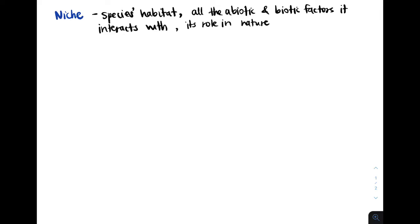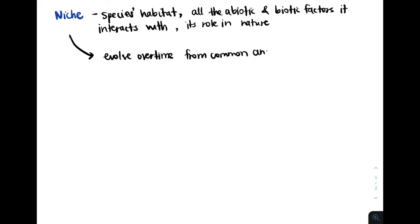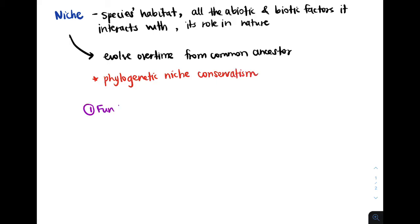A niche is something that a species retains from its ancestors, and the niche evolves over time. We know this because we see that similar species have similar niches, and this is because they diverged from a common ancestor that had a certain niche. This idea that a species that diverged from a common ancestor has a niche that resembles the niche of their common ancestor is called phylogenetic niche conservatism.